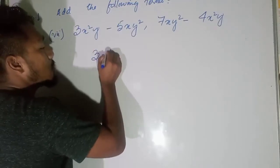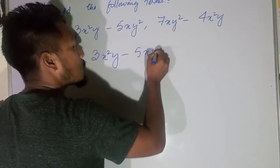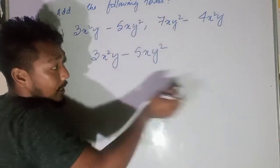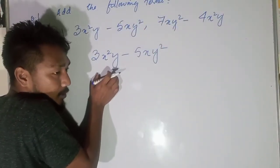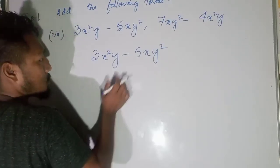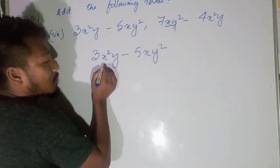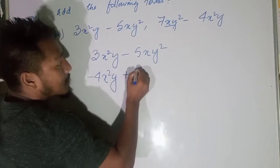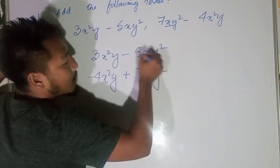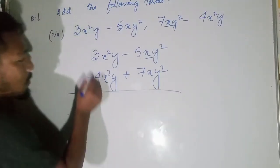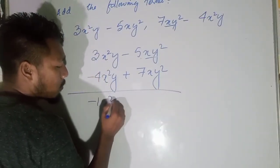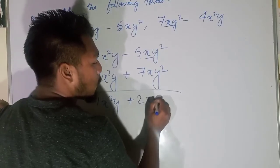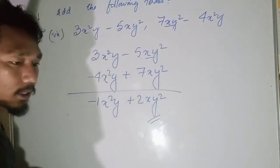Now for the column method for question 7: we write 3x²y minus 5xy² on the first line. We check whether the numbers are aligned — like terms must be in the same column. So minus 4x²y goes below 3x²y, and plus 7xy² goes below minus 5xy². Then: 3 minus 4 becomes minus 1x²y, and 7 minus 5 becomes plus 2xy². This is our answer.